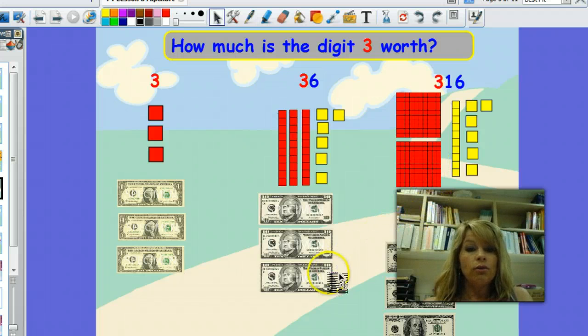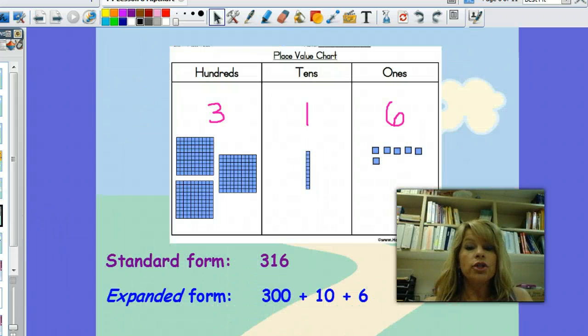And you are familiar with these tools, base ten blocks, for using place value. We can show that on a place value mat as three hundreds, one ten, and six ones. If we put that all together, we get the standard form of a number, and that's 316.